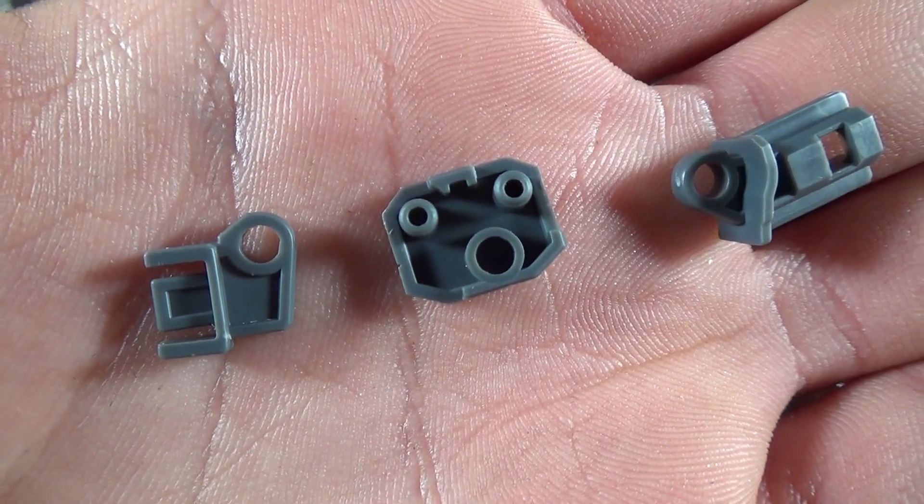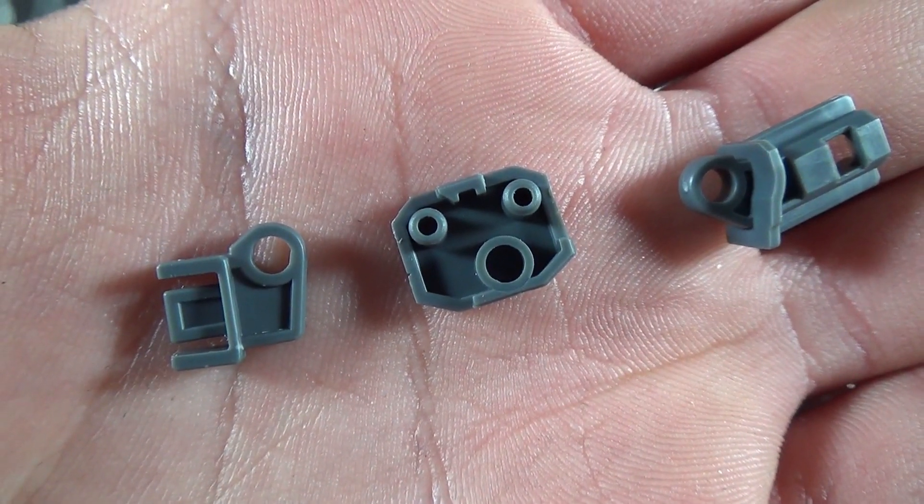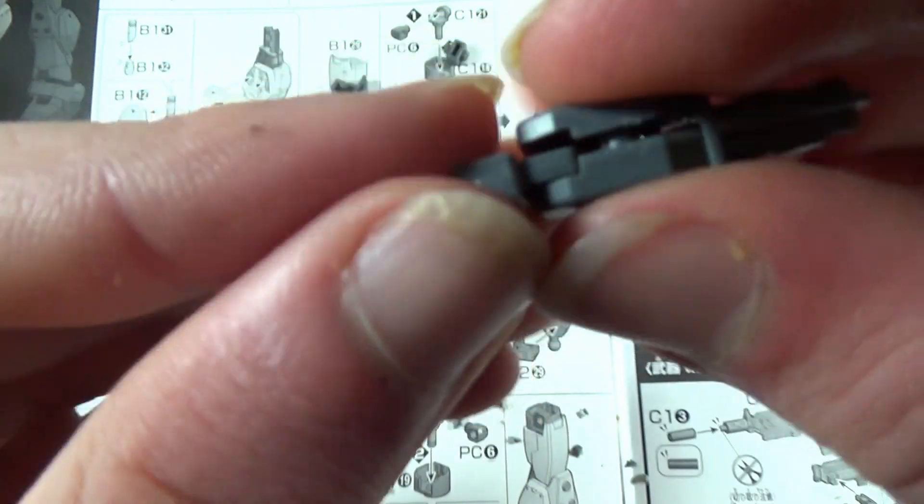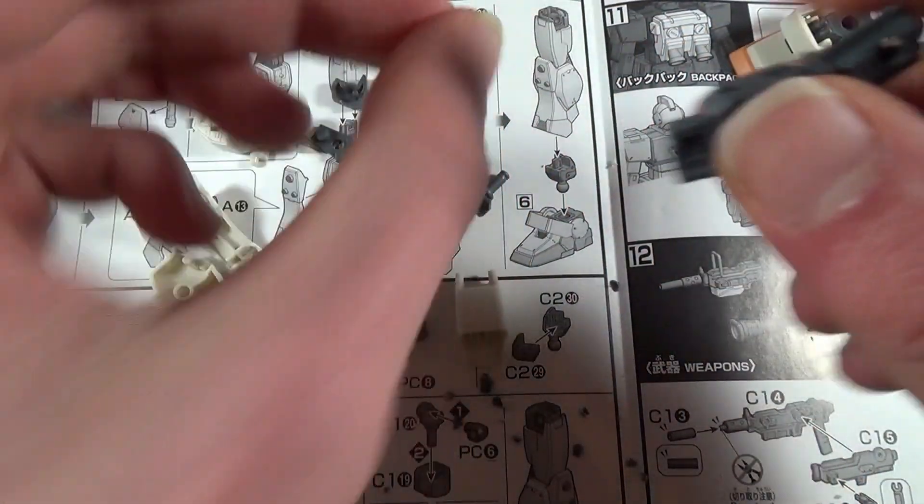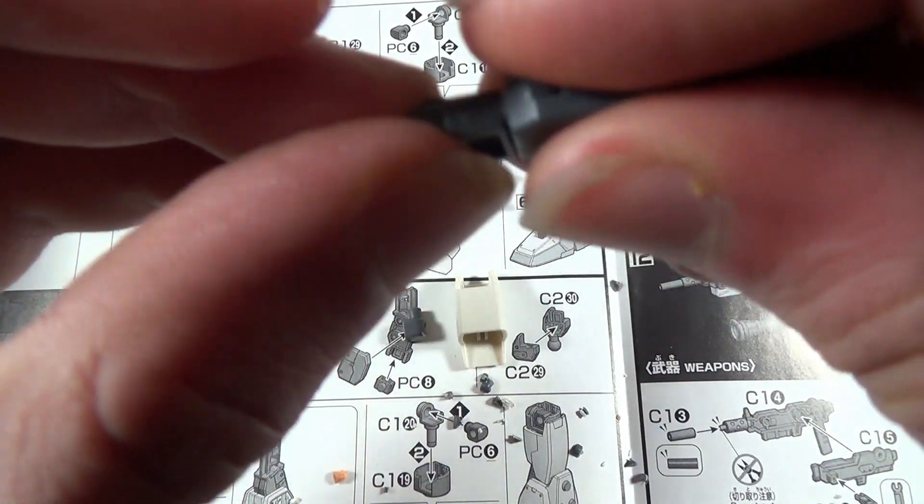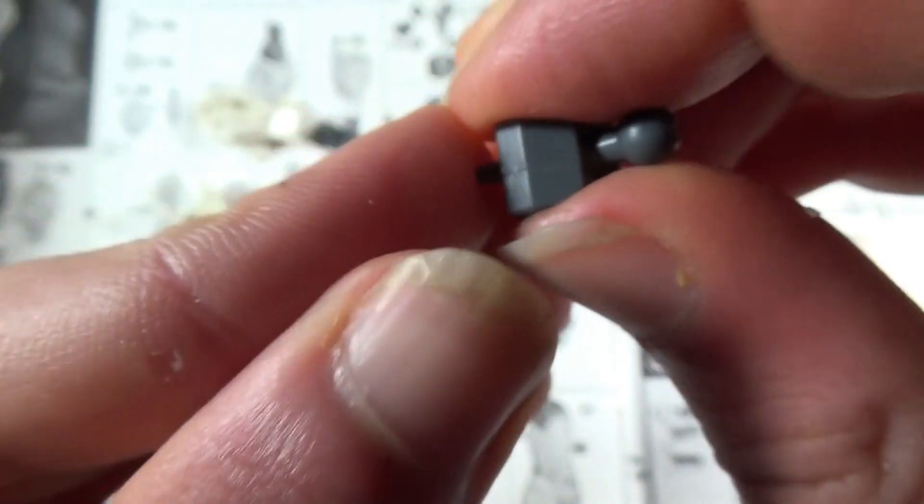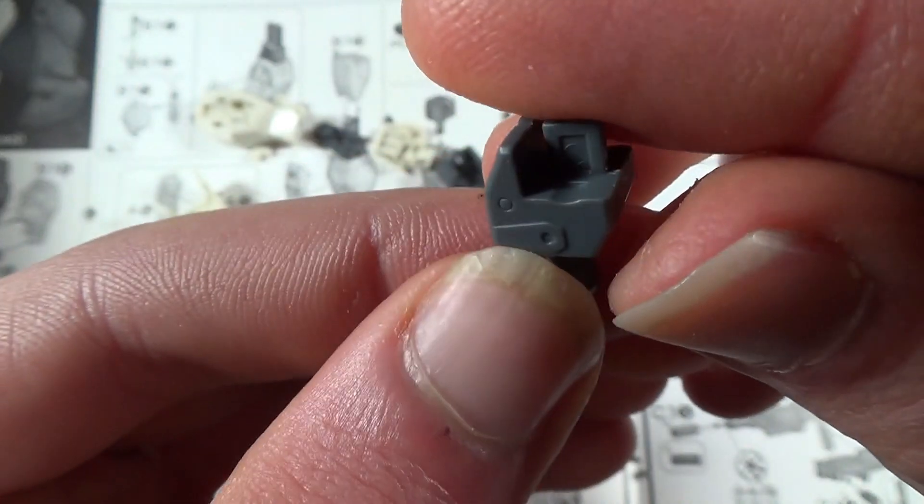And then in a very similar fashion of the elbows, for the knees we're just going to take these three pieces and pop them together. And then the cap goes over the top to make a sealed up joint. There's a polycap that goes over this right here. And these two pieces go together to make the ankle connection.